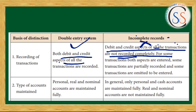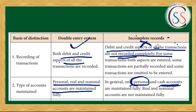The second difference is types of accounts maintained. In the Double Entry System, personal accounts, real accounts, and nominal accounts — all three types — are maintained. But in the Single Entry System, only personal accounts are maintained, along with part of a cash book. Real accounts and nominal accounts are not maintained.